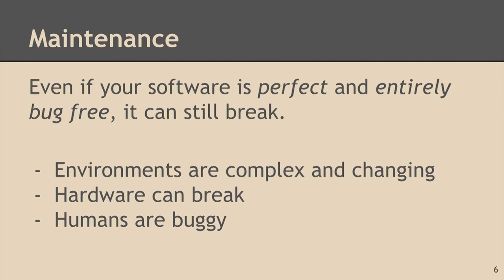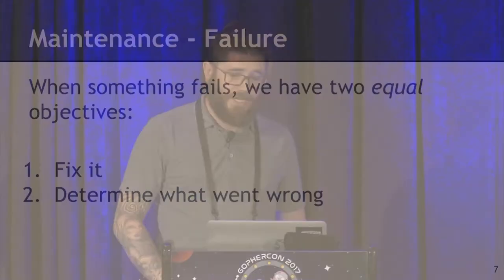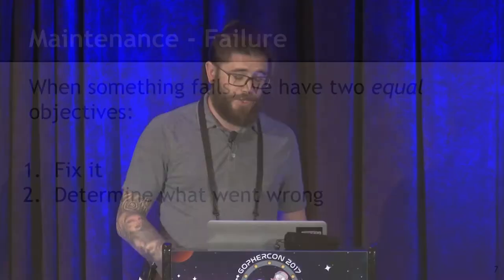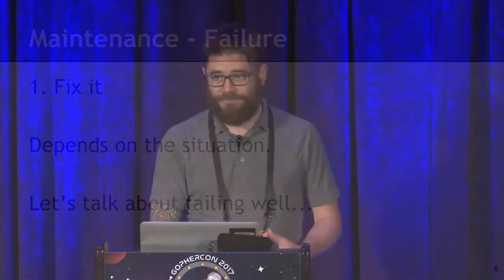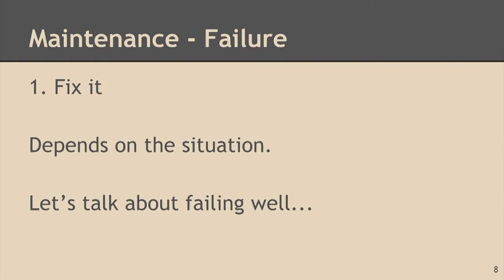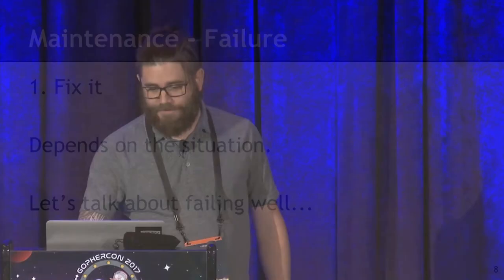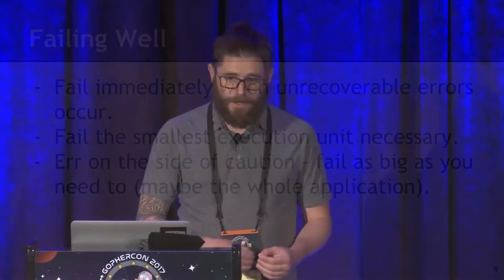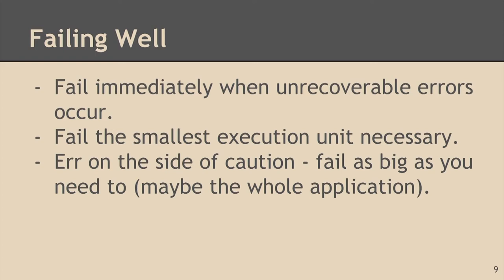When something fails, we have two equal objectives. One is fix it. Two is determine what went wrong. These are equal objectives because, yes, you have to fix it, but determining what went wrong is very, very important. When it comes to fixing it, it depends on the situation — I don't have a magic bullet. But we can talk about failing well. You want to fail immediately when an unrecoverable error occurs. You don't want to keep running in an inconsistent state — that's how you end up with data corruption.